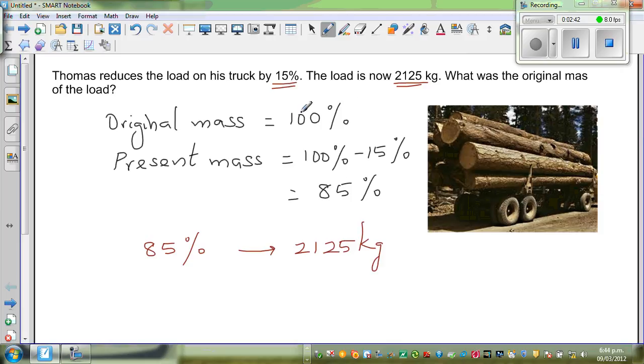So basically I want to find what is this 100%, which is the original weight. That is what my question is. So from 85%, can I find 1%? I think like this: 1 times what is 85? 1 times 85 is 85. So if you want to go from here to here, you have to multiply. So I have to divide from here to here.